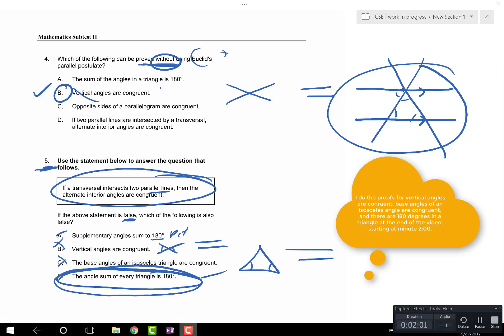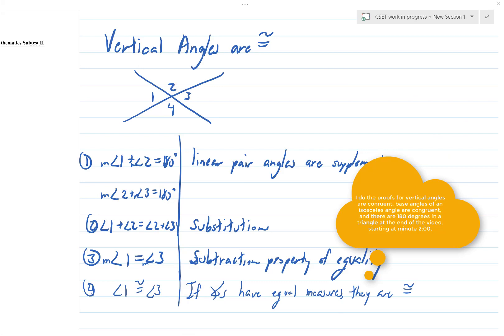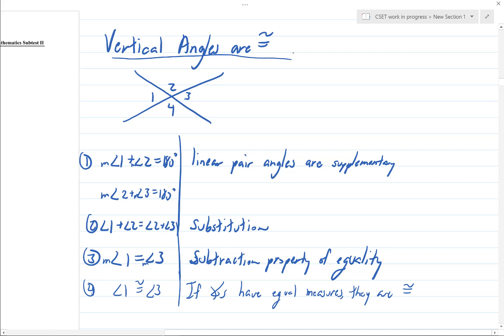Okay, so in problem four we said we could prove that vertical angles are congruent without using the parallel postulate. So here it is: if we know that angles 1 and 2 are linear pairs they add up to 180 degrees, and if 2 and 3 are linear pairs they add up to 180 degrees. So if they both equal 180, then measure of angle 1 plus measure of angle 2 equals measure of angle 2 plus measure of angle 3 by substitution.